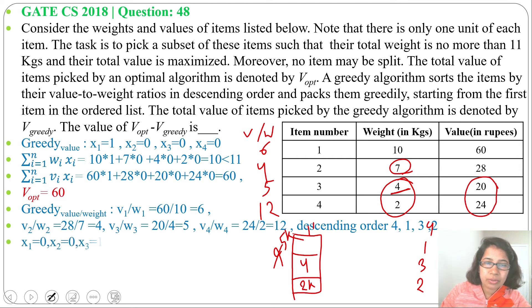So x1 = 0, x2 = 0, x3 = 1, x4 = 1. We are just choosing item 3 and item 4.